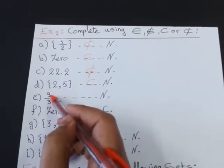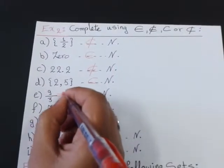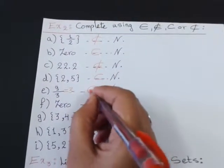Let's check. It has an answer. Yes. 9 divided by 3 equals 3. 3 is an element of N.